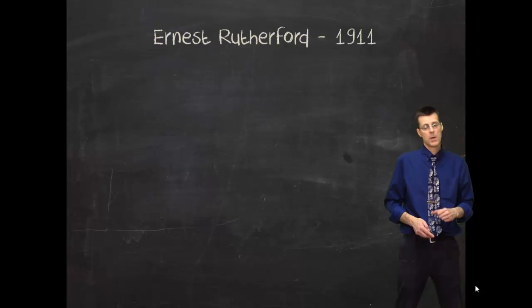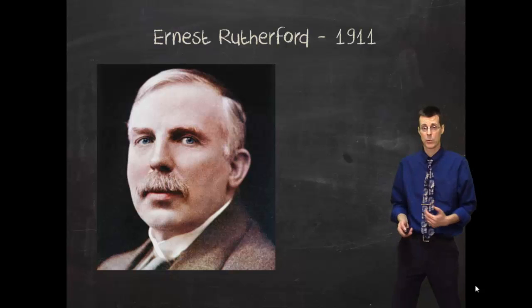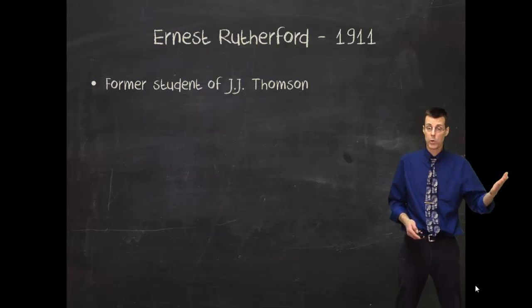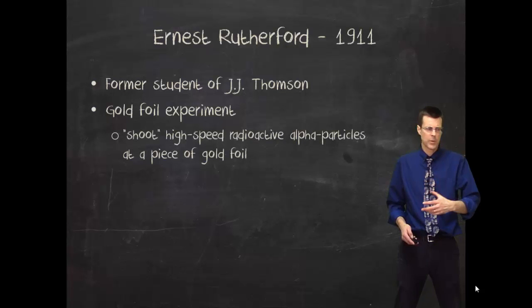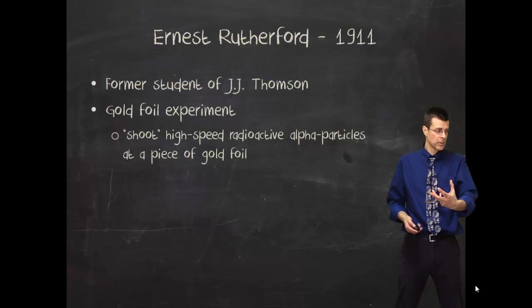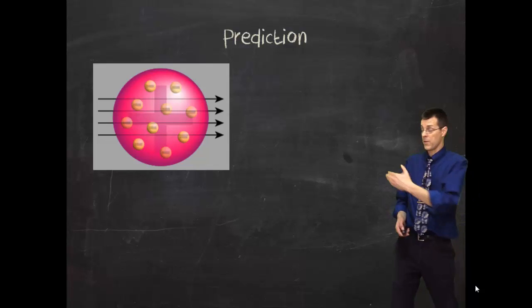And then Ernest Rutherford came along. And you've probably heard of Ernest Rutherford, and that's what he looks like. And it looks like he came along after color photography came around. But Ernest Rutherford, who worked with J.J. Thompson, did the gold foil experiment. And the gold foil experiment, he took alpha particles, radioactive particles, and shot it at a very, very thin sheet of gold foil.